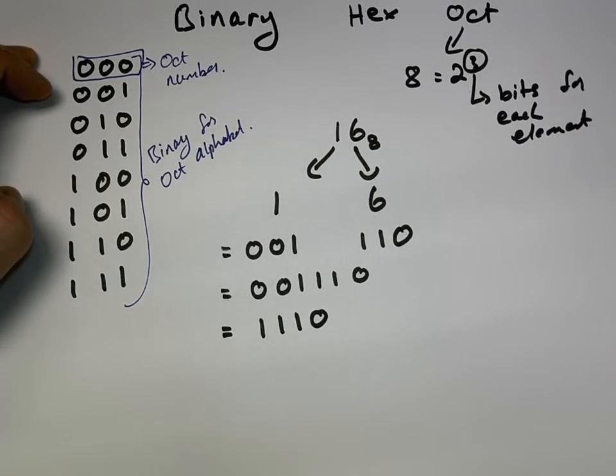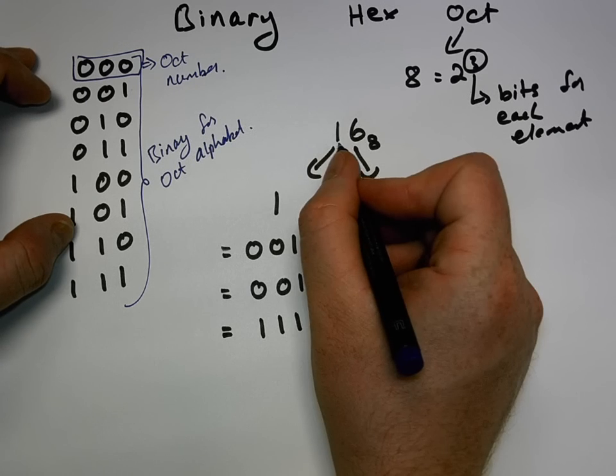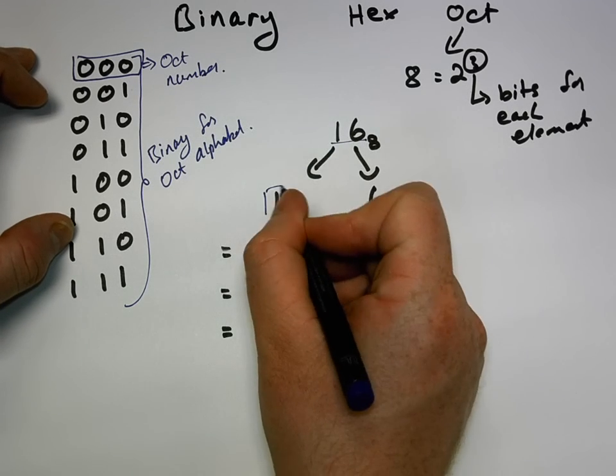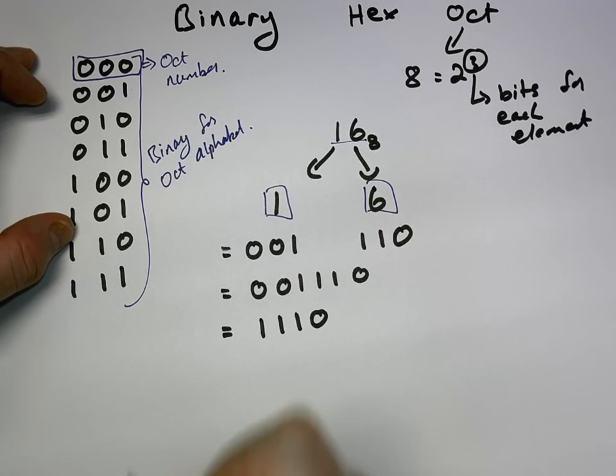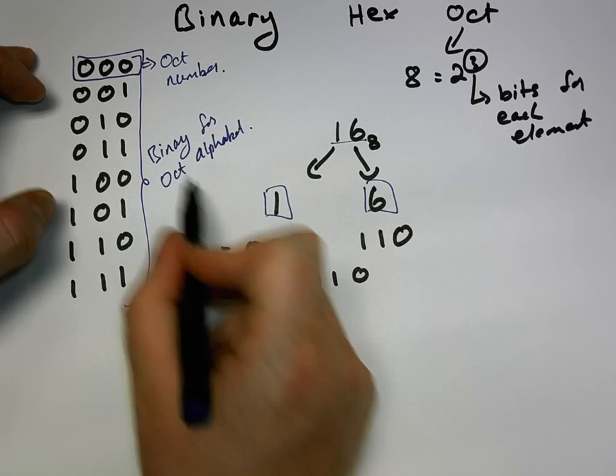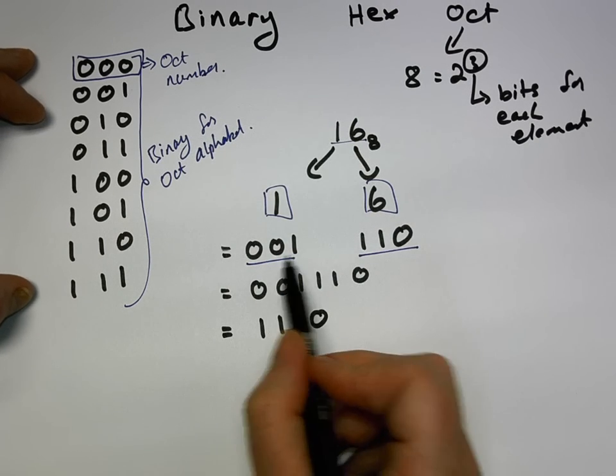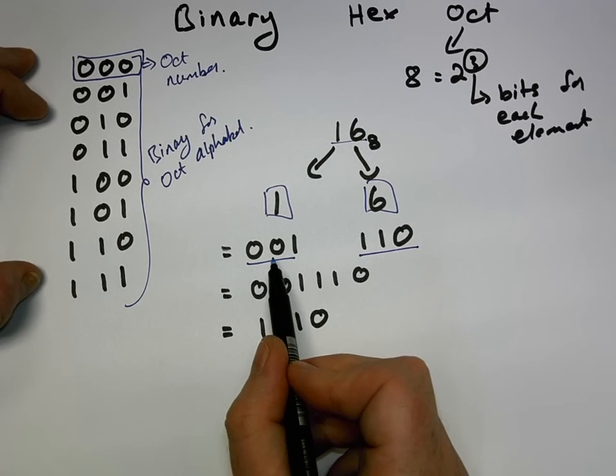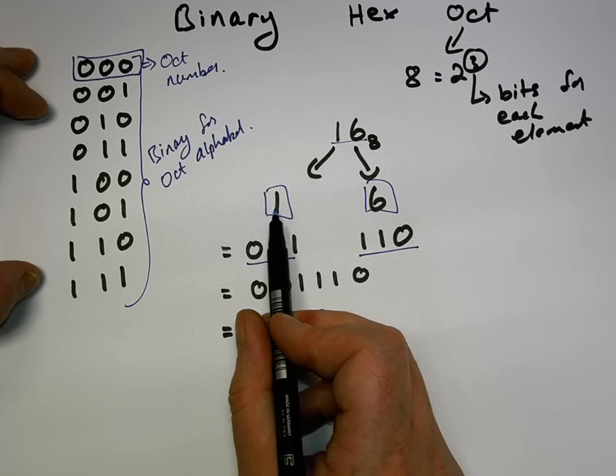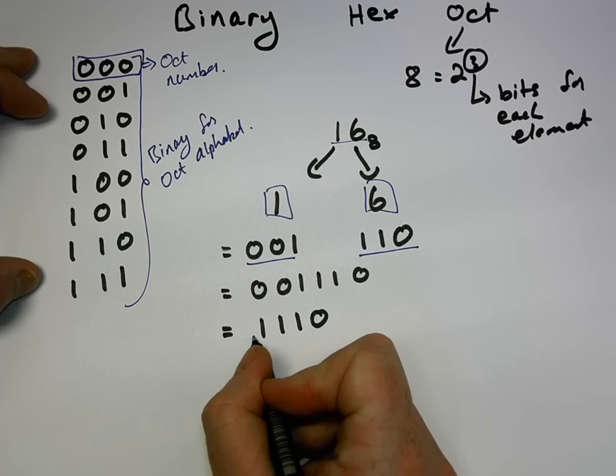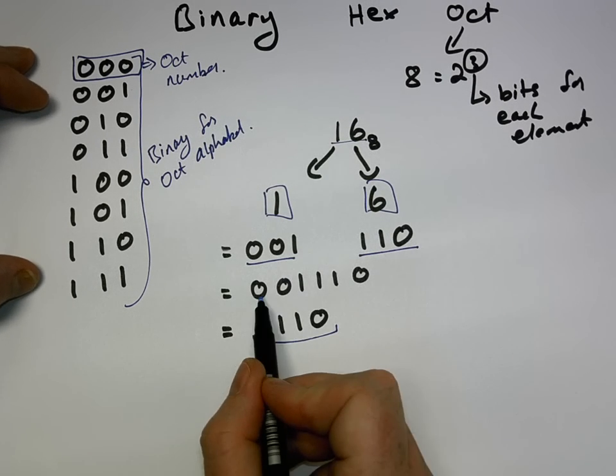So again, the process is quite simple. We have our number, we break it down into two individual characters or elements. We read off from our binary table the component bits, which is three binary digit bits for each element of the octal number. We join them up, removing the two zeros.